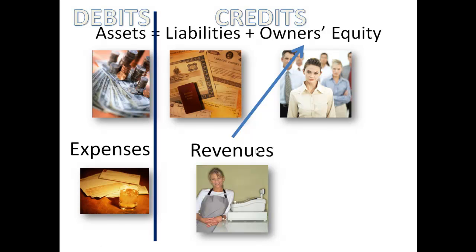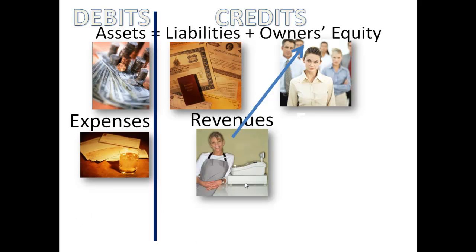This is debits and credits. Debit accounts are assets and expenses. Credit accounts are liabilities, owner's equity, and revenues. It's extremely important to understand which accounts are debits and which accounts are credits, because they're treated in opposite ways on the books of the company.